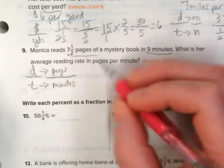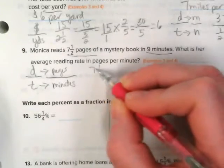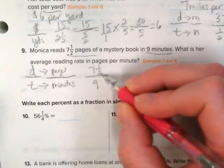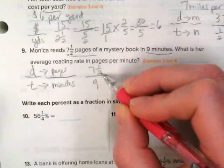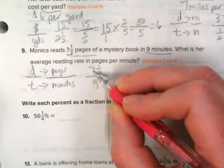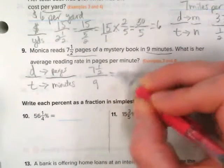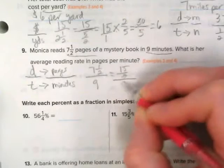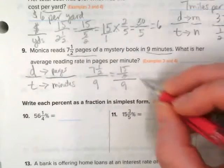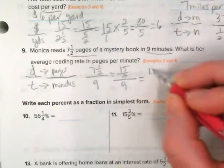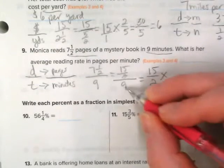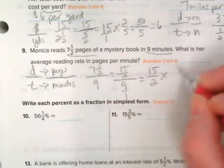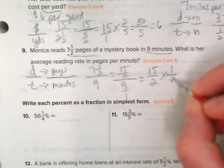So we have seven and a half pages over nine minutes. We have to convert this, so 2 times 7 would be 14 plus 1 is 15. You get 15 over 2 divided by 9. We're going to do keep-change-flip: 15 over 2 times, instead of 9 it's going to be 9 over 1. Remember, so our flip would be 1 over 9.